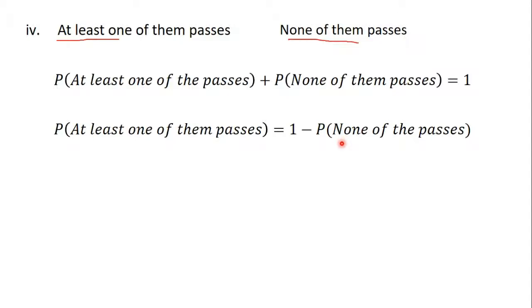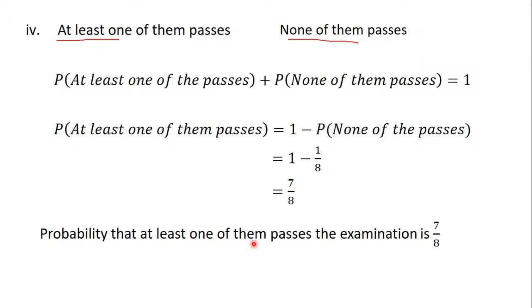We found the probability that none of them will pass to be 1 divided by 8. This means the probability that at least one of them passes equals 1 minus 1 divided by 8, which gives us 7 divided by 8. So the probability that at least one of them passes the examination is 7 divided by 8. In summary: 1 minus the probability that none of them passes gives the probability that at least one passes, and conversely, 1 minus the probability that at least one passes gives the probability that none of them passes.